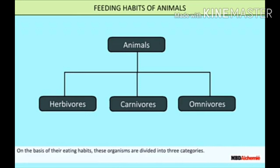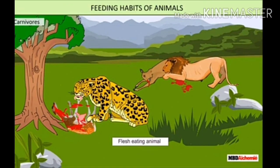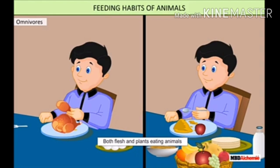The three groups are herbivores, carnivores, and omnivores. Animals that eat plants or plant products are called herbivores. For example, deer eating grass and rabbit eating carrots are herbivores. Other examples of herbivores are cow, buffalo, etc. The second group is carnivores — animals which eat the flesh or meat of other animals and completely depend on it are called carnivores, for example lion and fox.